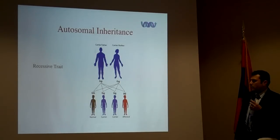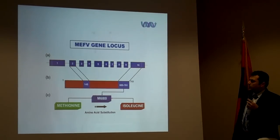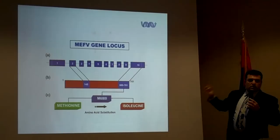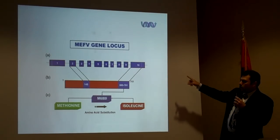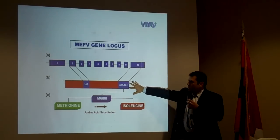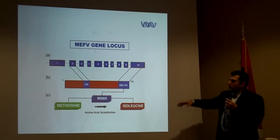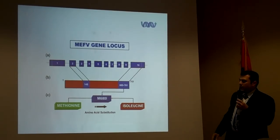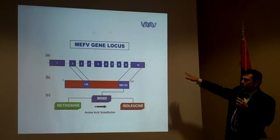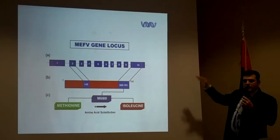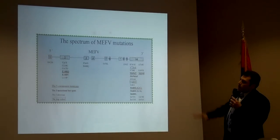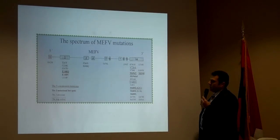The MEFV gene has 10 exons — those are the coding regions. When translated to protein, this is the structure. For example, at exon 2 at position 148 there's a mutation. We look at all 10 exons and see mutations in different exons.